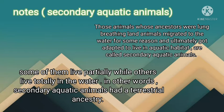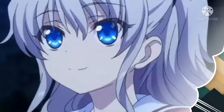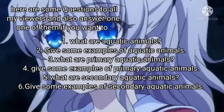Notes on secondary aquatic animals: those animals whose ancestors were air-breathing land animals that migrated to the water for some reason and ultimately got adapted to live in an aquatic habitat are called secondary aquatic animals. Some of them live partially while others live totally in water. In other words, secondary aquatic animals had a terrestrial ancestry.